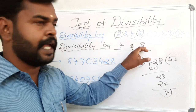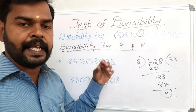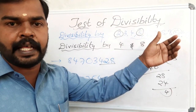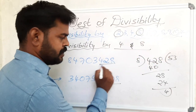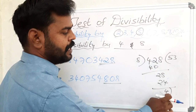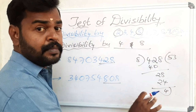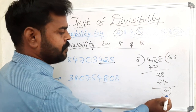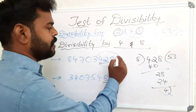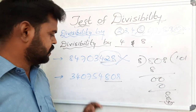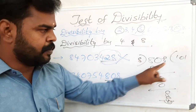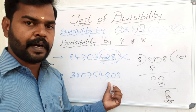For divisibility by 8, the last three digits should be a multiple of 8. See here: last three digits are 428. Is 428 divisible by 8? Doing the division: 428 ÷ 8 gives a remainder of 4, not 0. So 428 is not divisible by 8, meaning this whole number is not divisible by 8. Next example: last three digits are 808. 808 ÷ 8 gives remainder 0, so this number is divisible by 8.